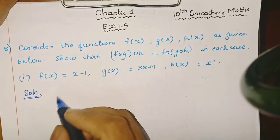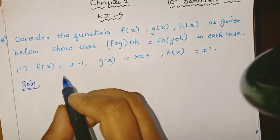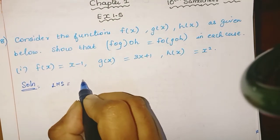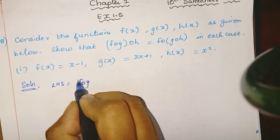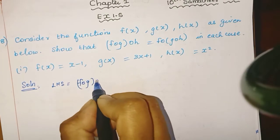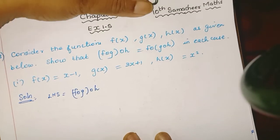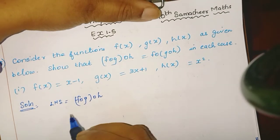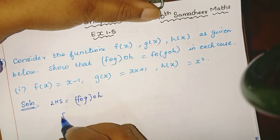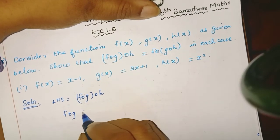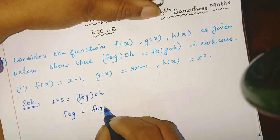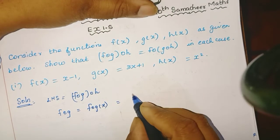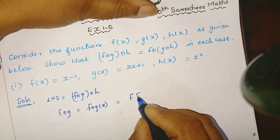Now, let's compute one by one. First, let's take LHS. LHS is f composition g composition h. So first, let's find f composition g.